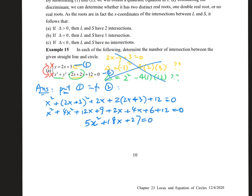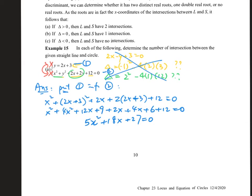We now have one equation in x only, and we can check the delta. Delta = b² − 4ac. Using a calculator, this gives −216, which is less than zero. So there are no points of intersection between the line and the circle.